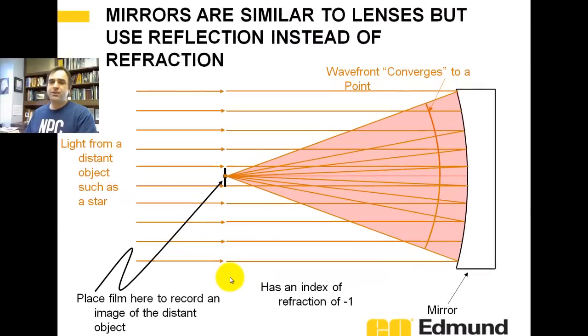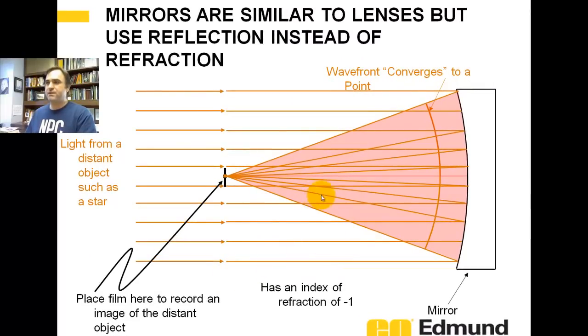The analogy to a lens is a mirror, and it's a single surface. It does the same thing. It's going to create a wavefront that converges to a single point, and again, it bounces back on itself. So a lens is continuous from left to right, whereas a mirror is going to go from left back to left, back in on itself. And for sake of when we get into equations, this mirror has an index of refraction of minus one.